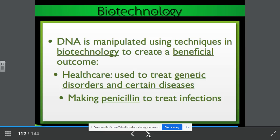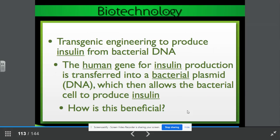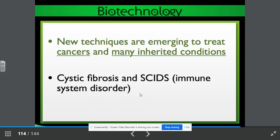DNA is manipulated using techniques and biotechnology to create a beneficial outcome. For example, in healthcare, it is used to treat genetic disorders and certain diseases. An example, making penicillin to treat infections. Transgenic engineering to produce insulin from bacterial DNA. The human gene for insulin production is transferred into a bacterial plasmid DNA, which then allows the bacterial cell to produce insulin. Think of how is this beneficial? New techniques are emerging to treat cancers and many inherited conditions. Cystic fibrosis and SCIDS, which is an immune deficiency system disorder, are just a few.